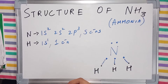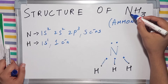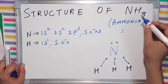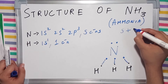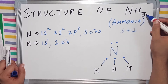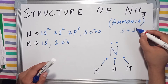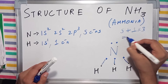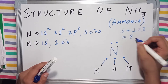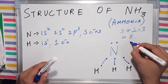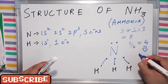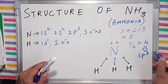We can also find out the hybridization of the ammonia molecule. Nitrogen has 5 valence electrons, and hydrogen has a single valence electron. Since we have 3 atoms of hydrogen, we write 5 plus 3 times 1, which comes out as 8. We then divide 8 by 2, which gives us 4. So its hybridization comes out as sp3.